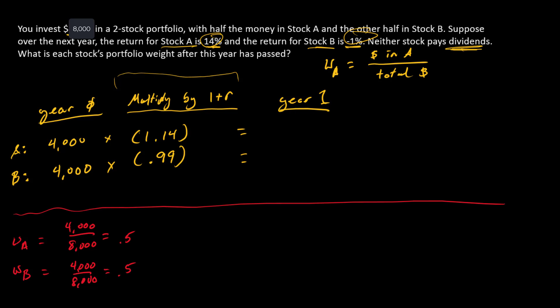Filling in the table here, we have $4,560 for stock A and $3,960 in stock B.